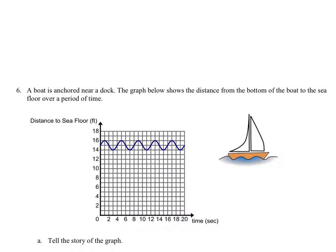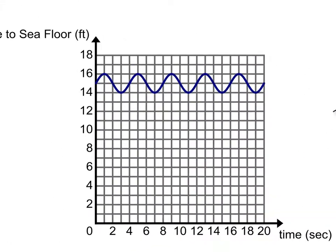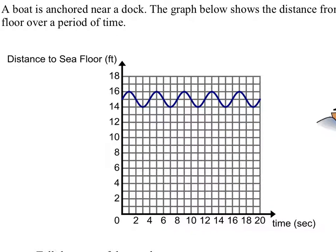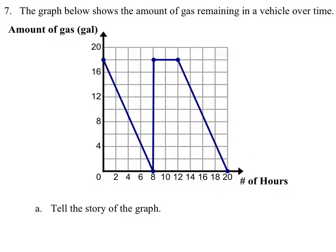A boat is anchored near a dock. The graph shows the distance from the bottom of the boat to the seafloor for a period of time. So what the heck is going on with this graph? Well, remember, the boat is just sitting there. So as the water moves up and down, it's just sitting there. So it's also moving up and down.